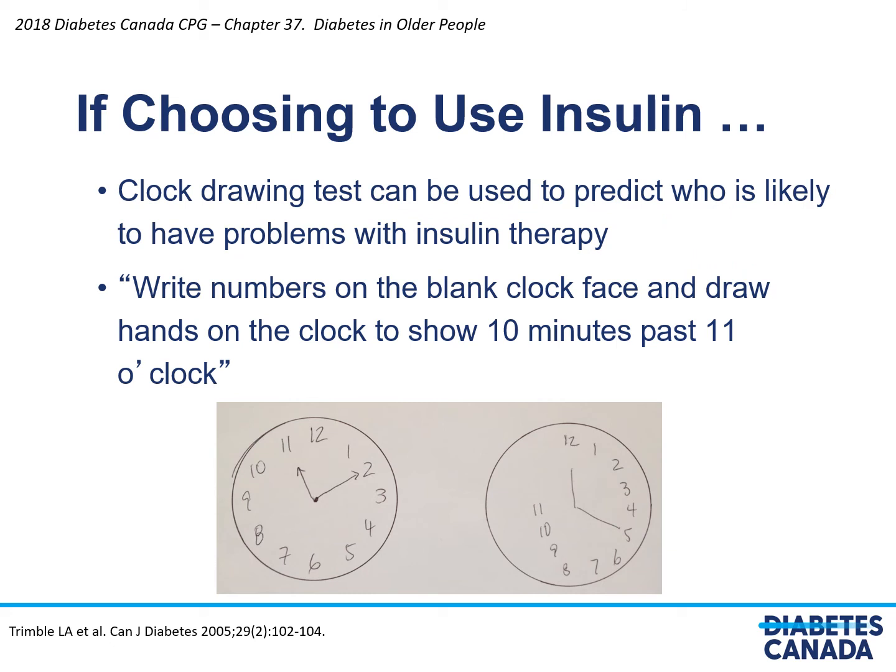If you decide to use insulin, you need to be certain that the patient is capable of administering it independently. One way to determine if a patient may have problems with insulin therapy is to perform a clock drawing test. If a patient cannot draw a clock correctly, they either won't be able to give insulin independently or will need extra time to be taught to use it effectively.